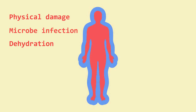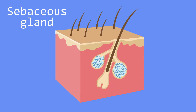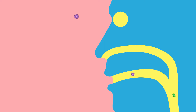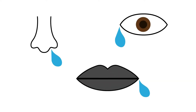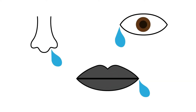That's not all — the sebaceous glands in our skin secrete acids which make the skin acidic and prevent the growth of pathogens. But what about pathogens entering through our nose, mouth, or eyes? Mucus and saliva both contain lysozyme enzymes that break down the cell walls of many bacteria.